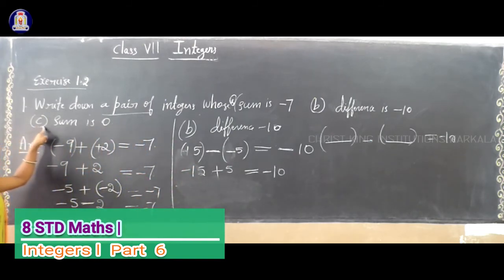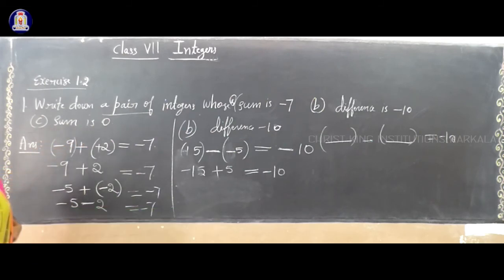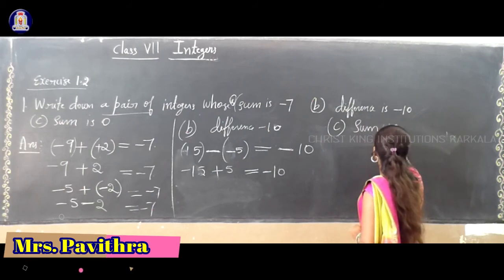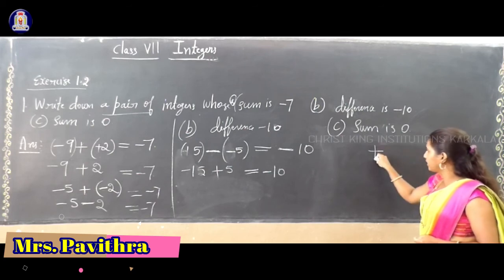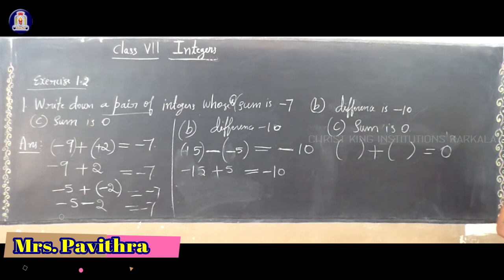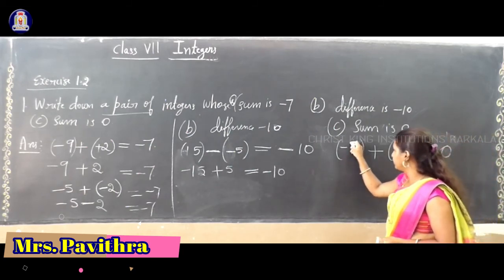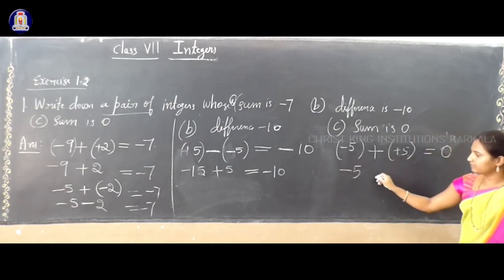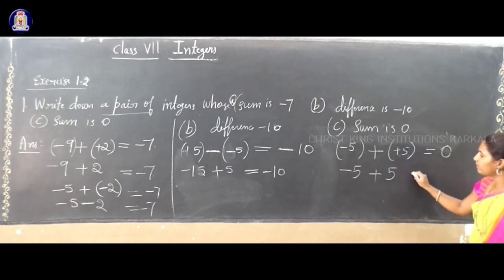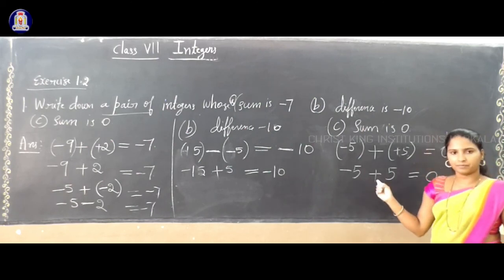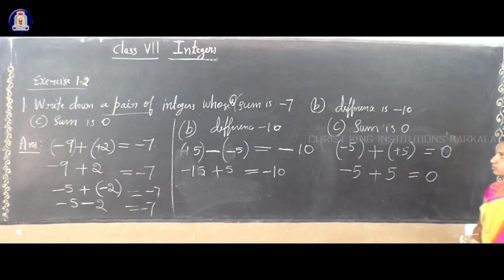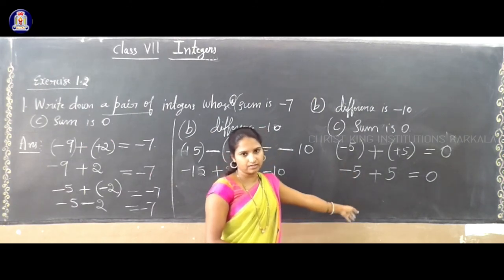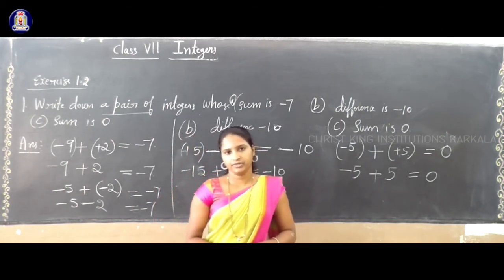Third one: the sum is 0. Sum means addition, so write a plus sign. The answer must be 0. I can write minus 5 and plus 5: minus 5 plus 5 equals 0 because 5 minus 5 is 0. You can consider any integers such as minus 10 plus 10, minus 15 plus 15, minus 100 plus 100 — all give answer 0. Thank you.